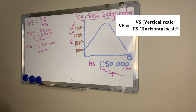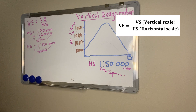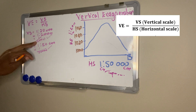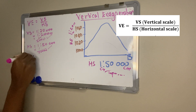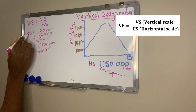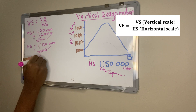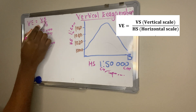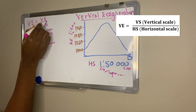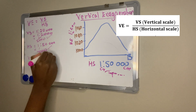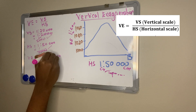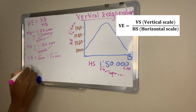So we have our vertical scale: 1 over 2,000 (in centimeters), and our horizontal scale: 1 over 50,000. Now let's apply the formula. VE equals VS over HS, which is 1 over 2,000 divided by 1 over 50,000.